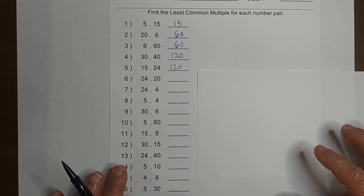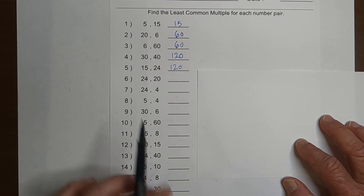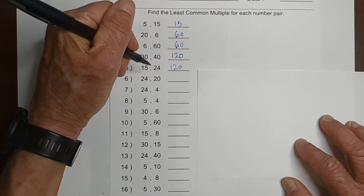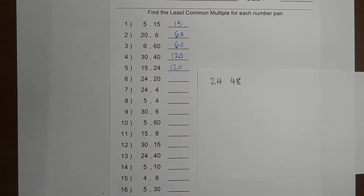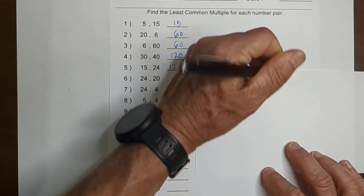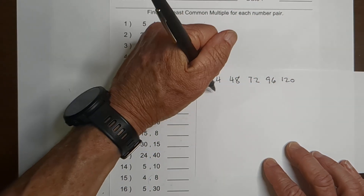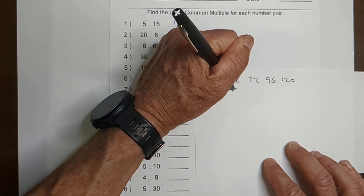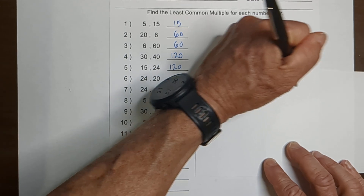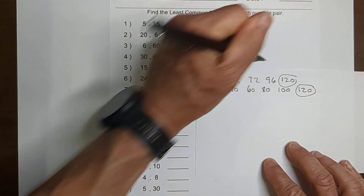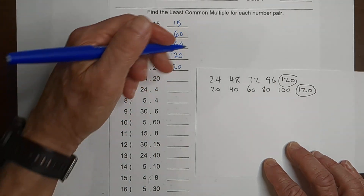If you get good at finding these least common multiples, then adding fractions with unlike denominators will be pretty easy. Let's go ahead and factor these. Starting with 24: 24, 48, 72, 96, 120. And then 20: 20, 40, 60 — no common factor yet. Then 80, 100, 120. There we go — that's the least common factor, which becomes the least common multiple. So for 24 and 20, it is 120.